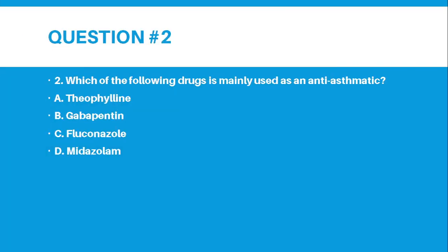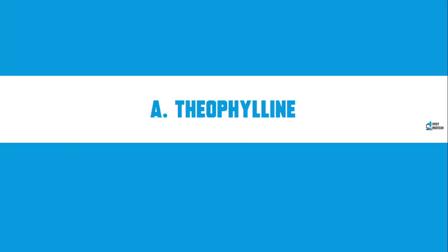Number 2. Which of the following drugs is mainly used as an anti-asthmatic? A. Theophylline, B. Gabapentin, C. Fluconazole, or D. Midazolam. The correct answer for number 2 is letter A — Theophylline.